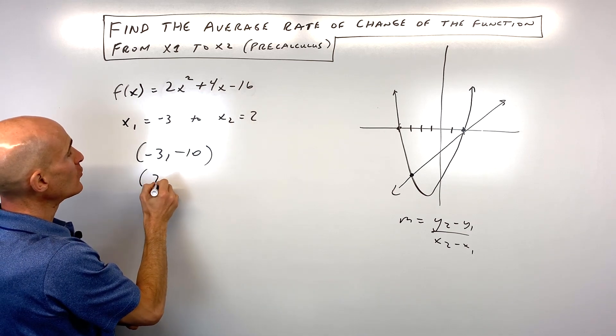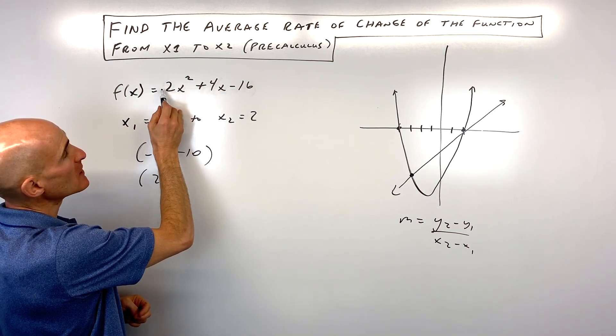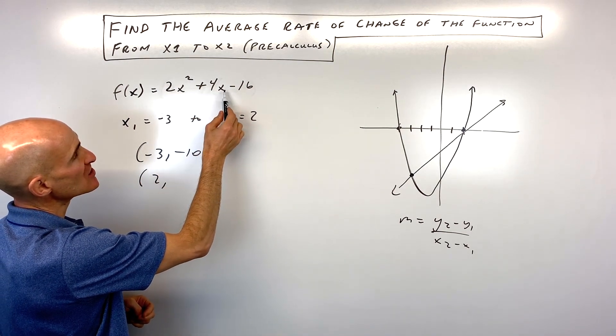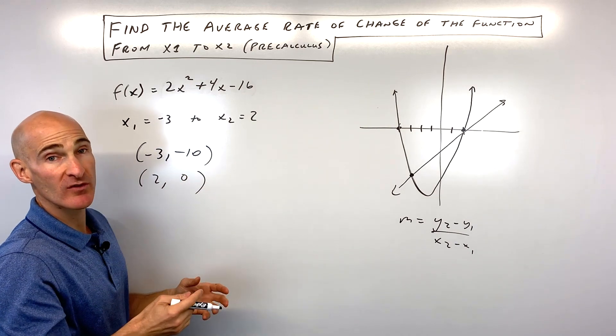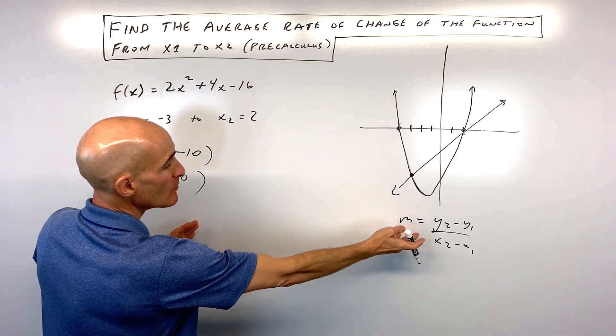If we put 2 in for x, we get 2² is 4, times 2 is 8, plus another 8 which is 16, minus 16 is 0. So we've got our two points now.